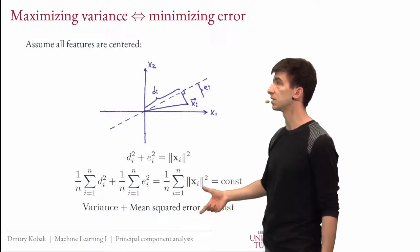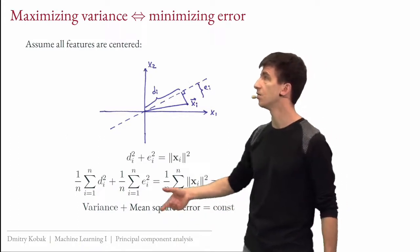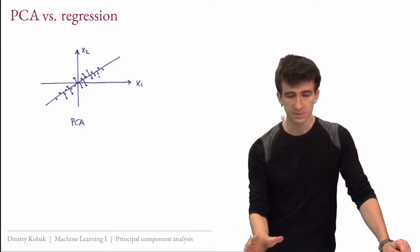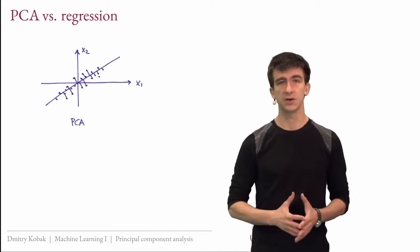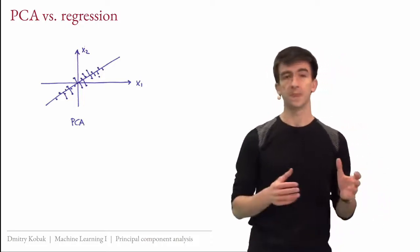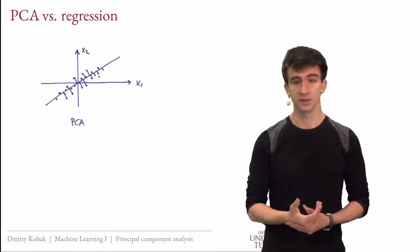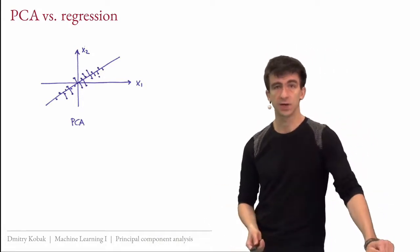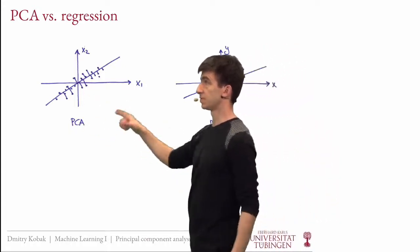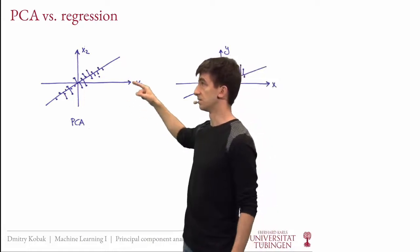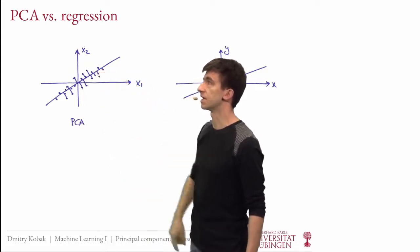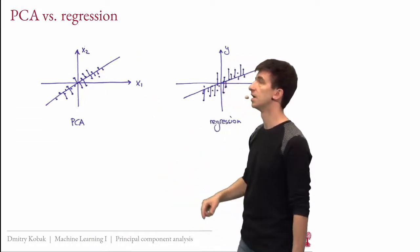We can decide to minimize reconstruction error or maximize variance — these are the same thing. One comment: minimizing squared error may remind you of linear regression. But this is a very different thing. In this illustration of PCA, the reconstruction errors are perpendicular to the axis — all lines are perpendicular to the projection axis. In regression, you predict one feature from another, and errors are parallel to the Y-axis. This makes these problems not equivalent.